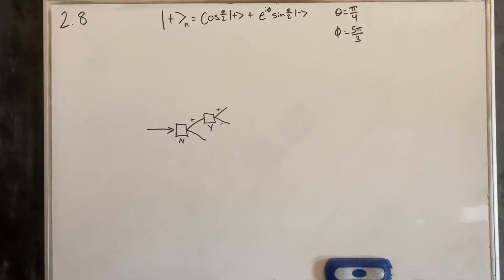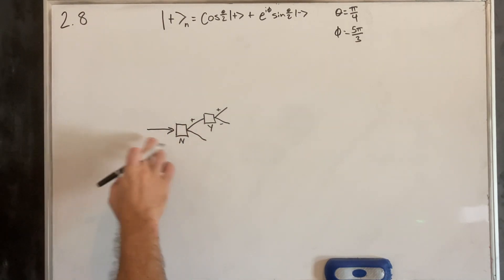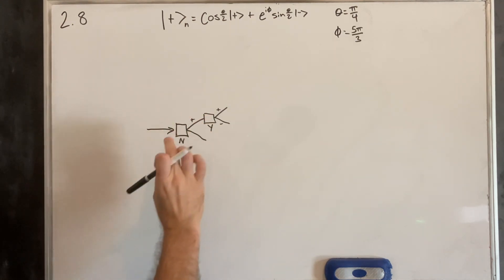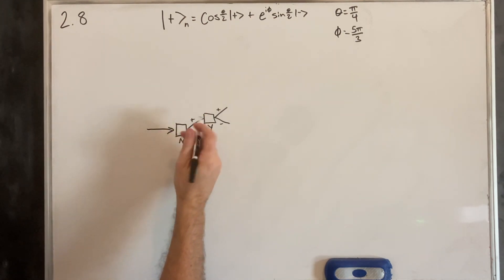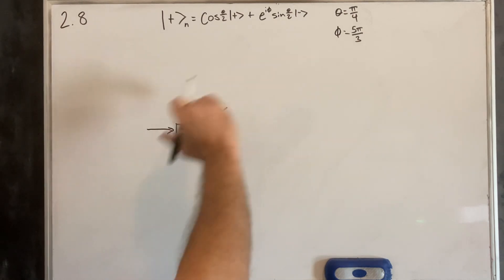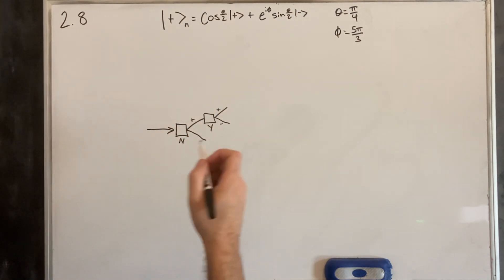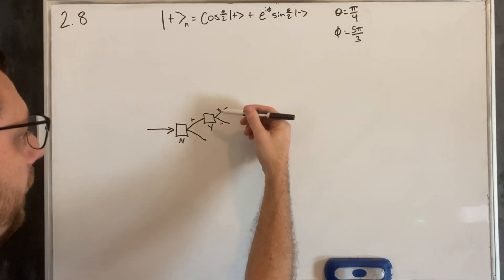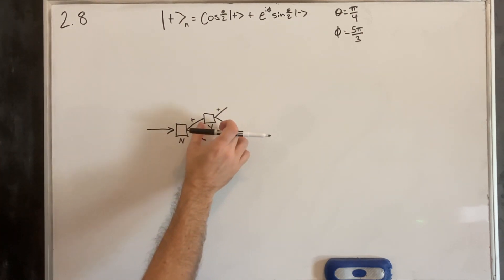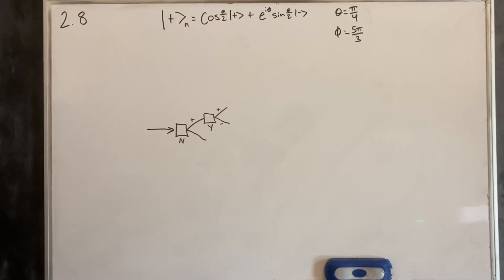Alright, 2.8 gives us a little bit of a break from the last one — this one's quite a bit easier. It shows us this diagram here: basically some particles are coming into this detector in the n-direction, and whatever reads as up-spin is put into a y-detector. We're asked to find the probabilities of up and down from this y-direction when it started off in the up state in the n-direction.